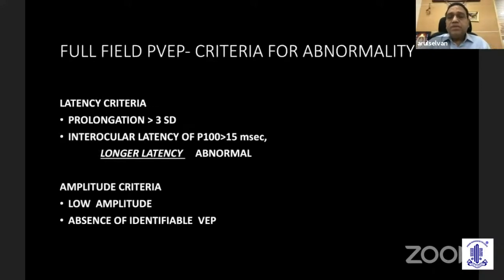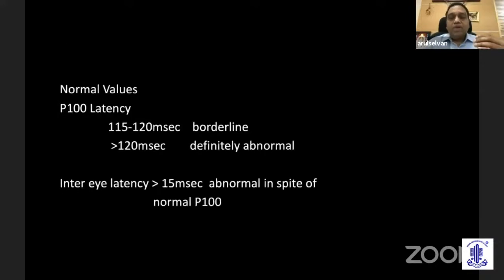There are two diagnostic criteria: latency and amplitude. The latency criterion is more than three standard deviations from normative data. For P100, up to 115 milliseconds is considered normal; 115 to 120 milliseconds is borderline abnormal; beyond 120 milliseconds is definitely abnormal. Normative data is derived from normal and sex-matched controls. The inter-eye latency difference between one eye and the other is also significant — if it is more than 15 milliseconds between eyes, that eye is considered to have optic neuropathy.